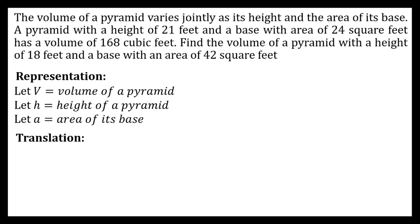Since we use the word 'varies jointly,' we're going to deal with joint variation. Our dependent variable is the volume of the pyramid and our two independent variables are the height and the area of the base. We can formulate our equation as V is equal to the constant of variation times the height times the area of the base.